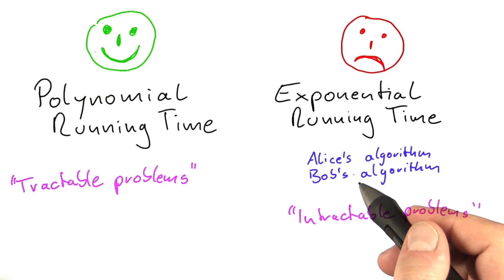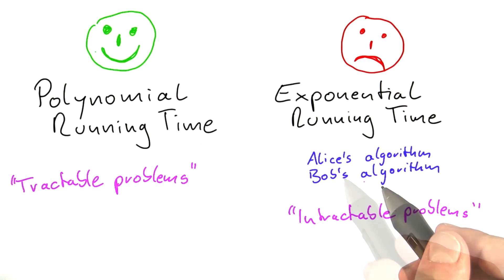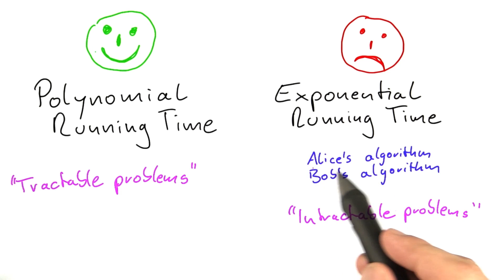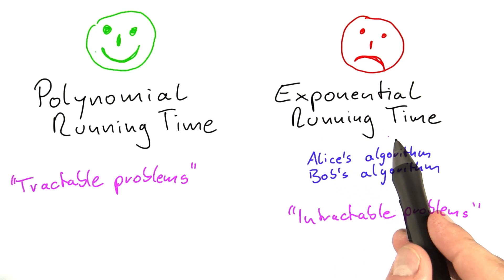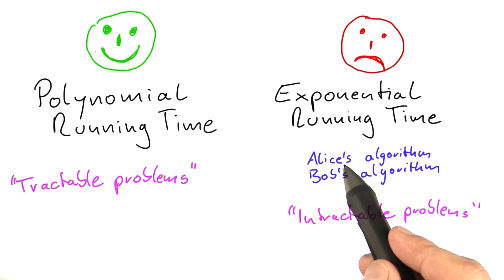And this is going to be a rather obvious question to some of you, I hope. Does the fact that so far we only know exponential time algorithms for the problem that Alice was working on, and the problem that Bob was working on, does that mean that their problems are intractable?